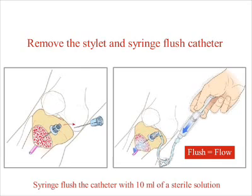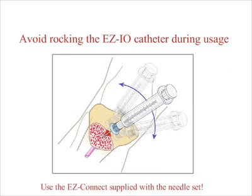There are four important points to consider once the EZIO AD has been established. First, routinely reconfirm that the EZIO AD catheter is secure and in position. Second, maintain appropriate protection at the insertion site, guarding against accidental bumping or dislodgement. Third, frequently monitor the EZIO AD, the fluid you're administering, and the extremity. And lastly, ensure that you remove the EZIO AD within 24 hours. Avoid rocking the EZIO catheter during usage. Use of the EZConnect supplied with the needle set will help you avoid complications. Attaching a syringe during treatment could lead to extravasation or catheter failure.